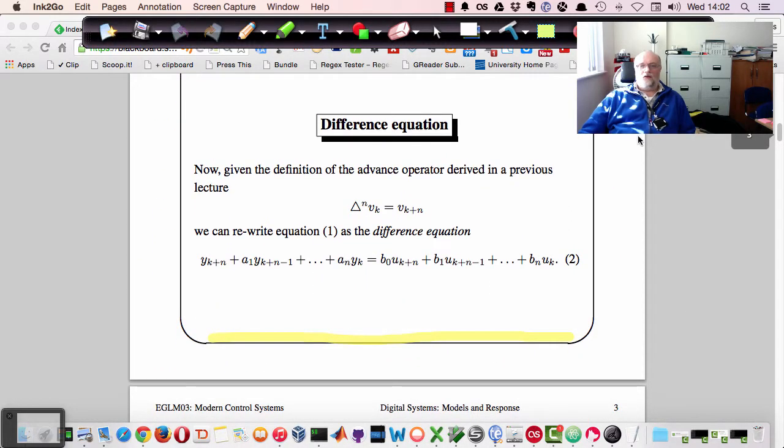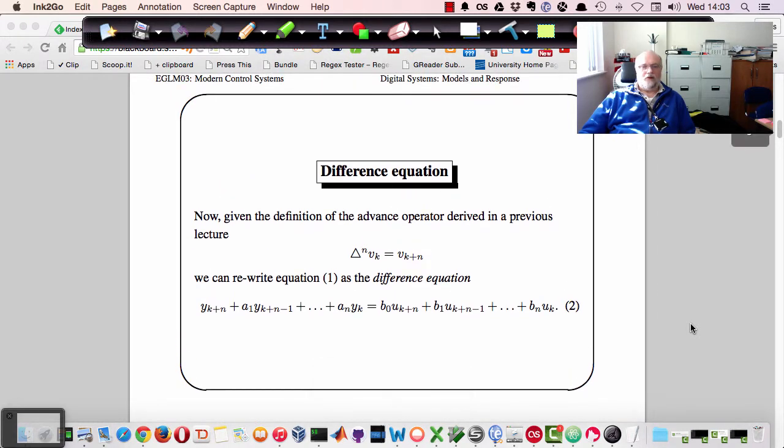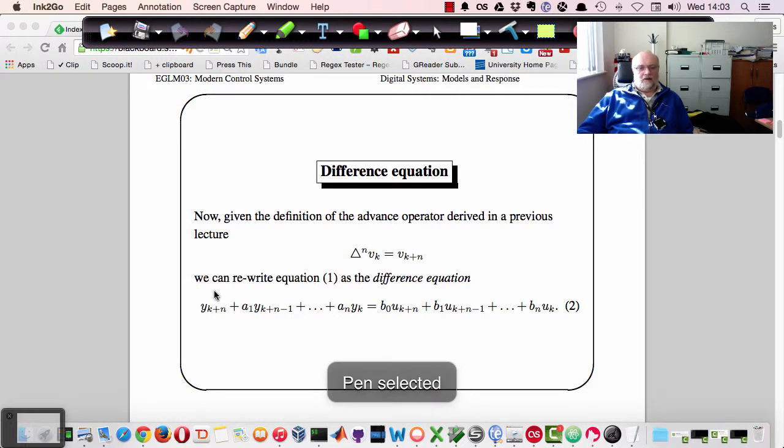So if we take the difference equation, then if we write down what that advanced operator means, advanced n applied to vk is vk plus n, so advancing the sequence by n steps. Then we can rewrite that equation that we had on the previous slide like this. So we've got y k plus n, a1 y k plus n minus 1,